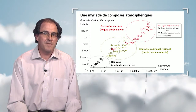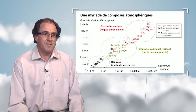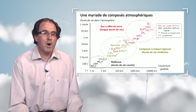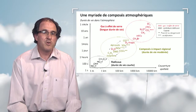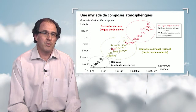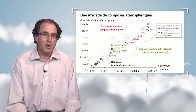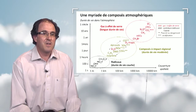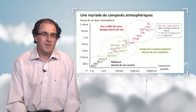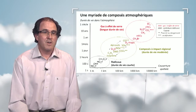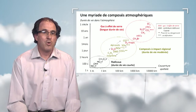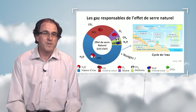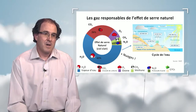In red are most greenhouse effect gases, and the greenhouse effect is a planetary issue. In the middle are the compounds that play a role in atmospheric pollution. Tropospheric ozone is an exception with an intermediate duration, and water vapor plays a role in the natural greenhouse effect.